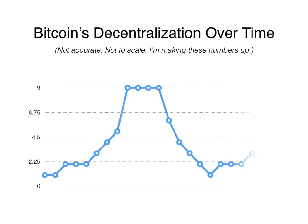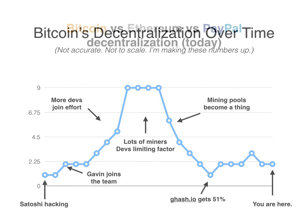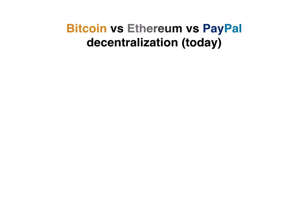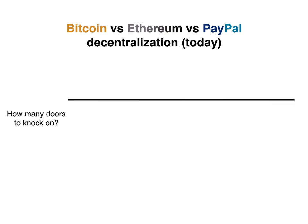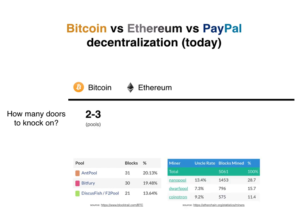If we graph it over time, we see a start where the number is low because there's just Satoshi hacking away. It progresses until a peak where the limiting factor is the number of developers. There are a whole bunch of nodes. But then mining pools form, and mining pools become the limiting factor. We get all the way down to one at one point in time when GHash had over 51% of the power. Comparing Bitcoin's decentralization to Ethereum's to PayPal's, we can look at statistics on mining pools today and see that there are about two or three pools that combined have over 51% of the hash rate.